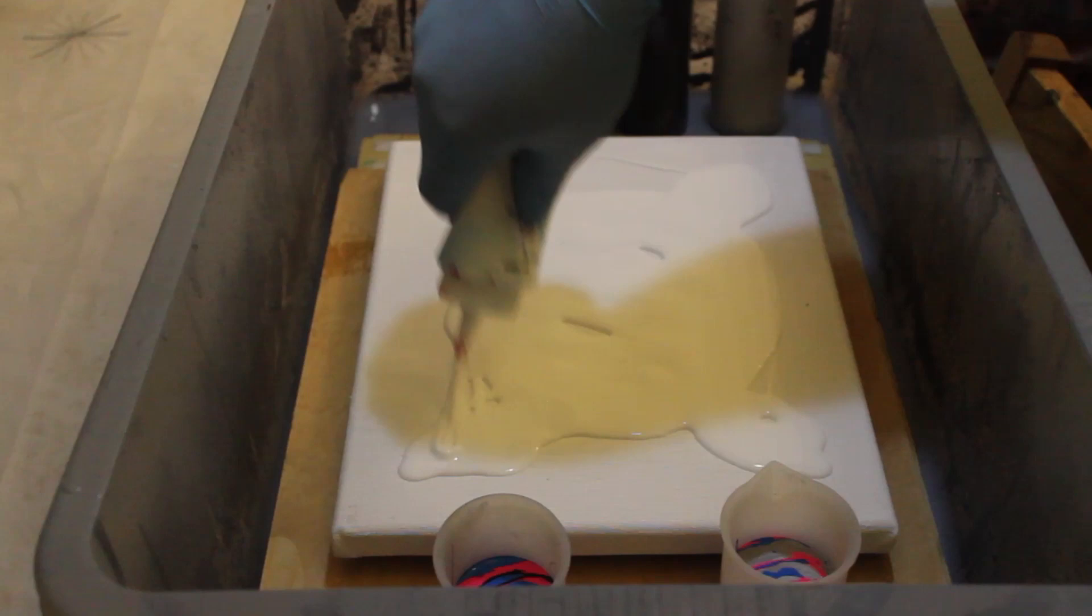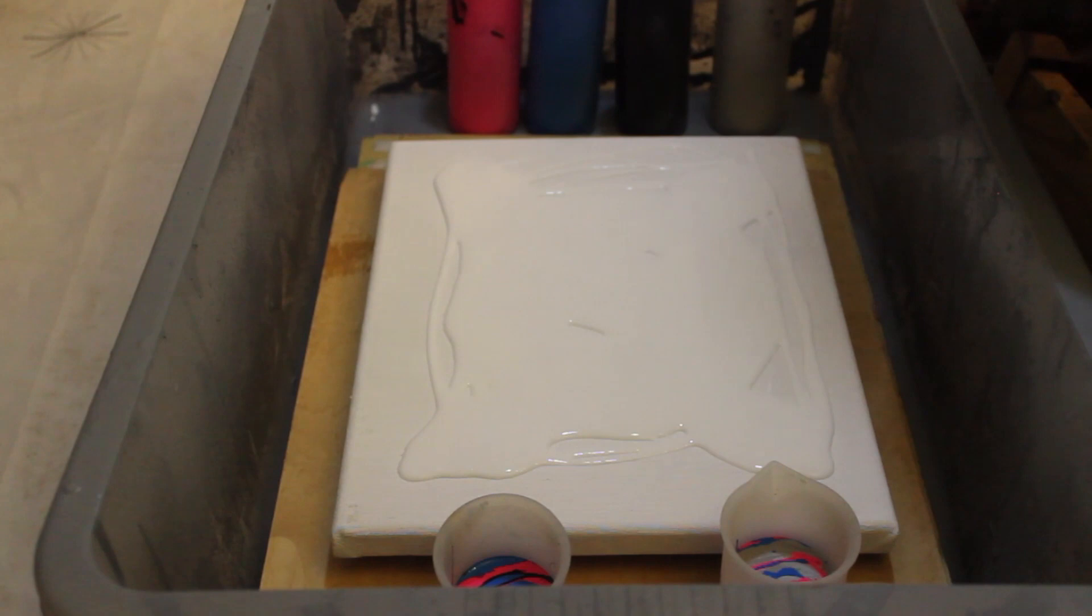The idea of a kiss pour is you've got two cups and you put the spouts together as if they're kissing, and then you pour it down onto the canvas in a single stream of paint.